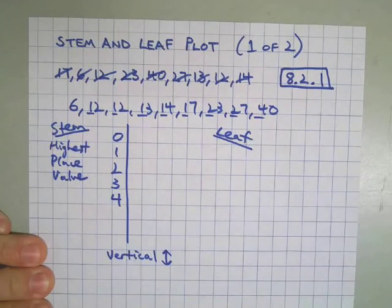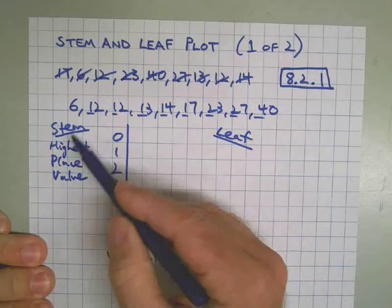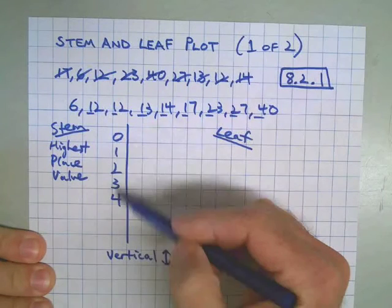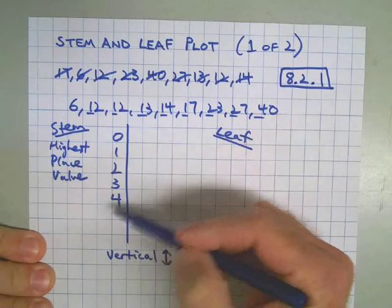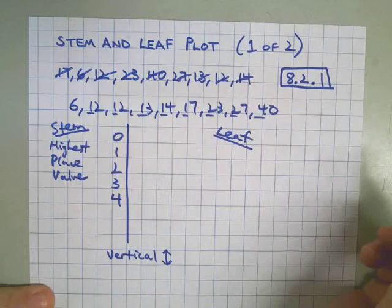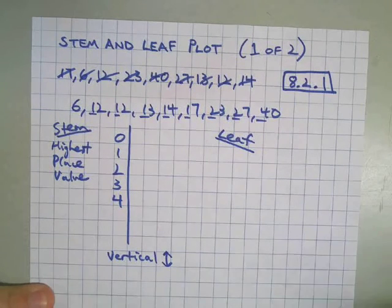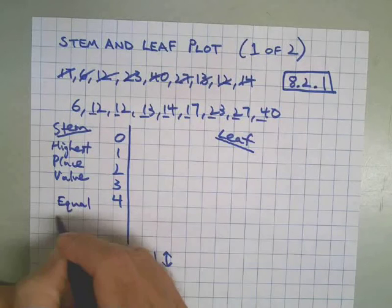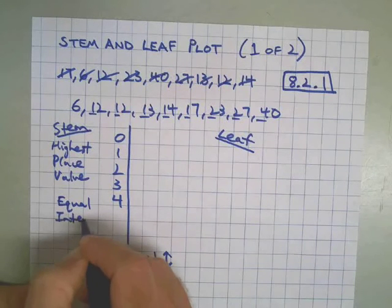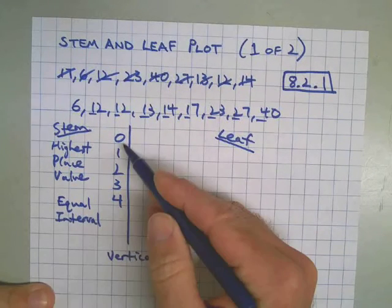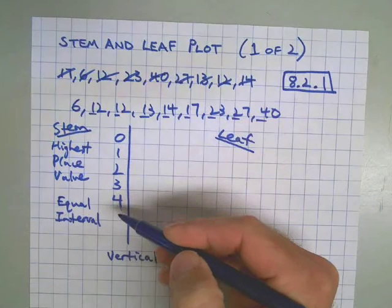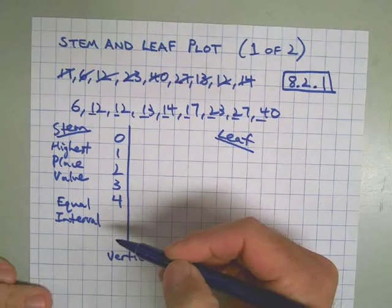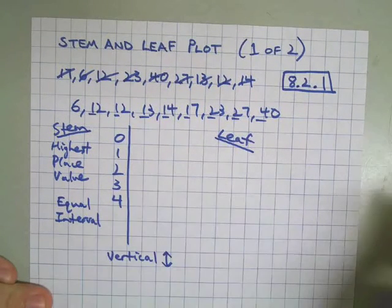A few questions to answer as we build this. First of all, the highest place value needs to go in order from top to bottom, lowest to highest, as we've talked about in class. We don't want to leave anything out. We want equal intervals. Every graph needs equal intervals, so we don't want to skip any numbers, and we also don't want them out of order.